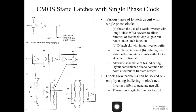There are various types of static D-latch circuits, and usually we can use a single-phase clock. The first type uses a weak inverter, which is defined as an inverter with a low W-over-L ratio to allow the removal of the feedback loop's transmission gate, but still retain the static latch function.